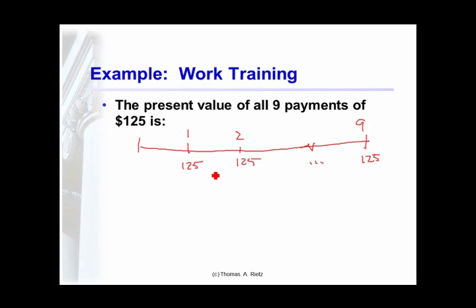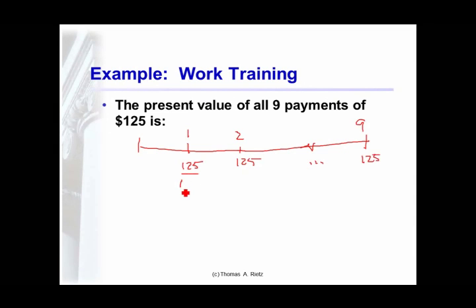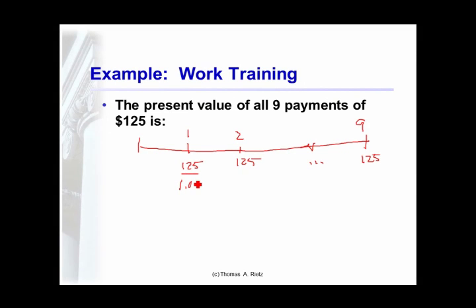The value of $125 in a month is the $125 divided by or discounted by 1 plus interest one time. The value in period two is divided by one plus interest or discounted two times. The value in period nine is discounted by one plus interest nine times.